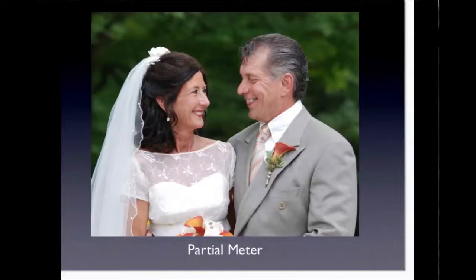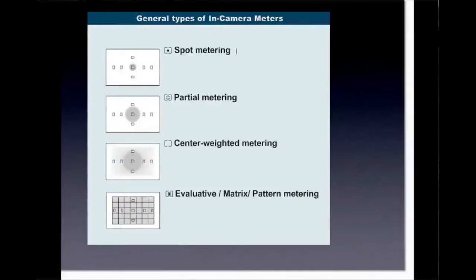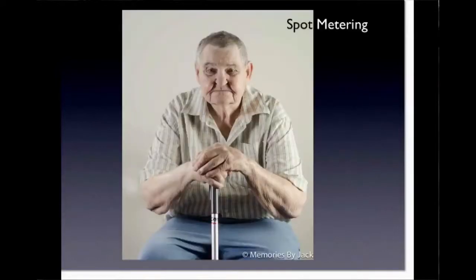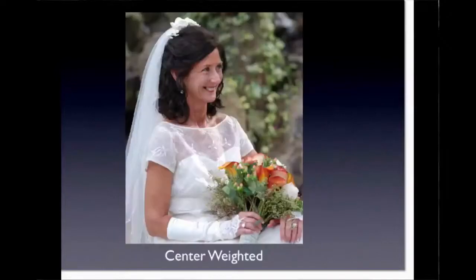When you're doing center-weighted metering and you want the background lit a little bit — like in a portrait with depth of field — center-weighted is better than spot because you want that background to come into play. Even if you blur it with depth of field, you still want it available to you.